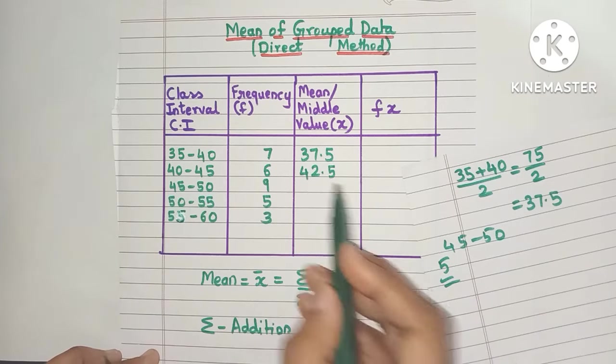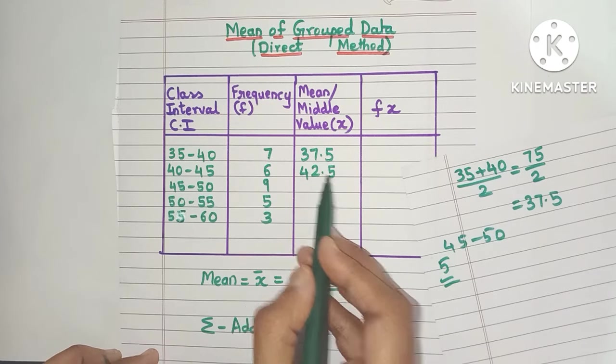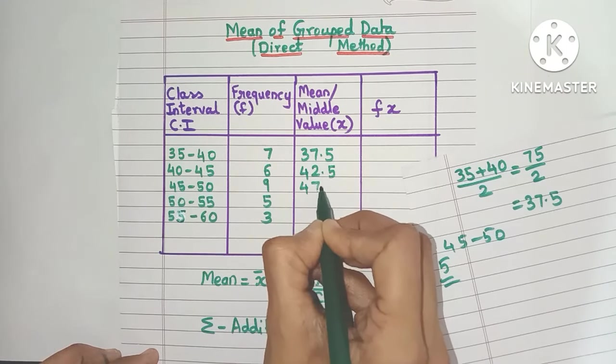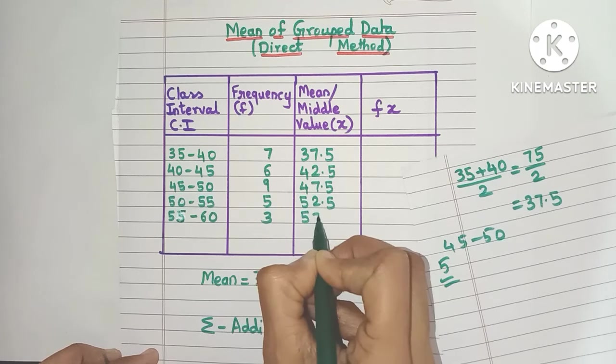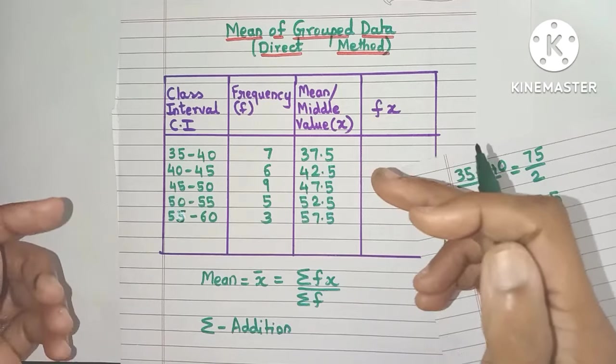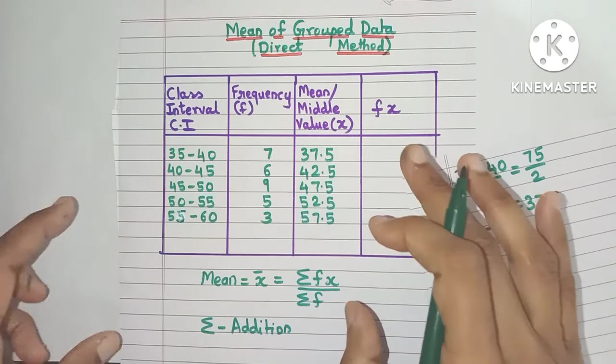It's a very easy method. Similarly, just add 42.5 to 5, you will get 47.5, then you will get 52.5 and 57.5. This way you will get the x values for all the class intervals.